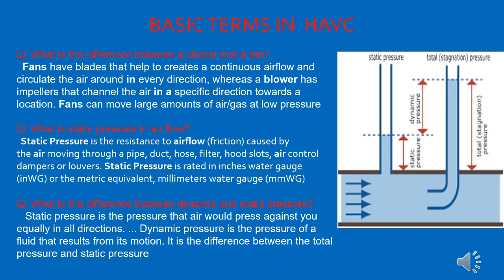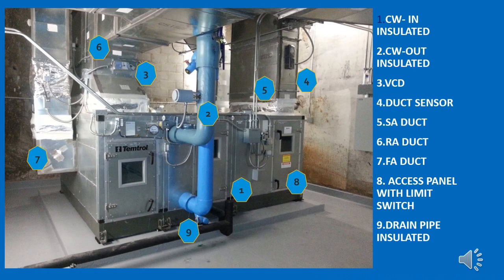What is the difference between dynamic pressure and static pressure? Static pressure is the pressure that air exerts equally in all directions. Dynamic pressure is the pressure of the fluid that results from its motion — it is the difference between the total pressure and the static pressure.